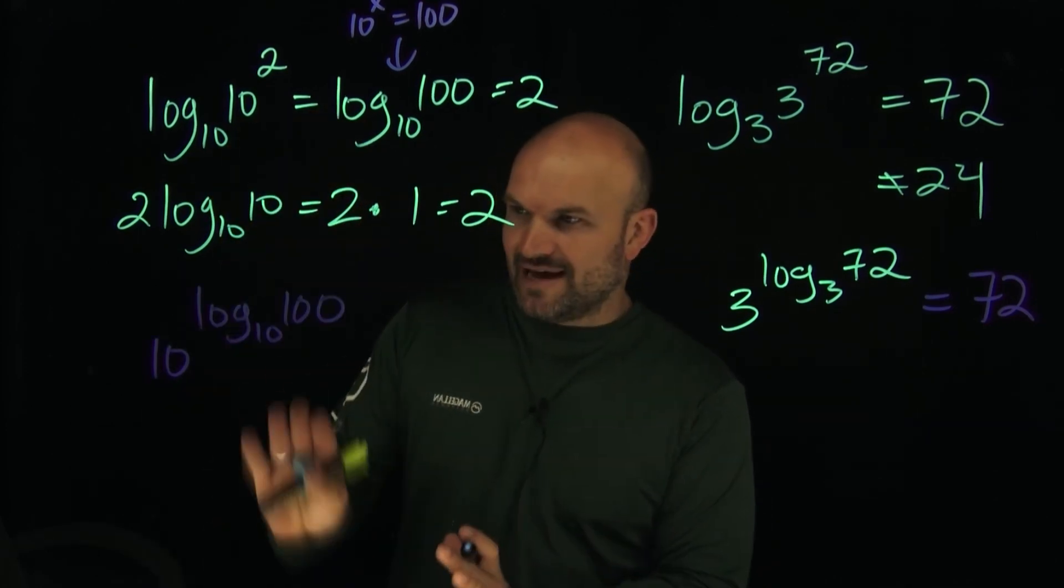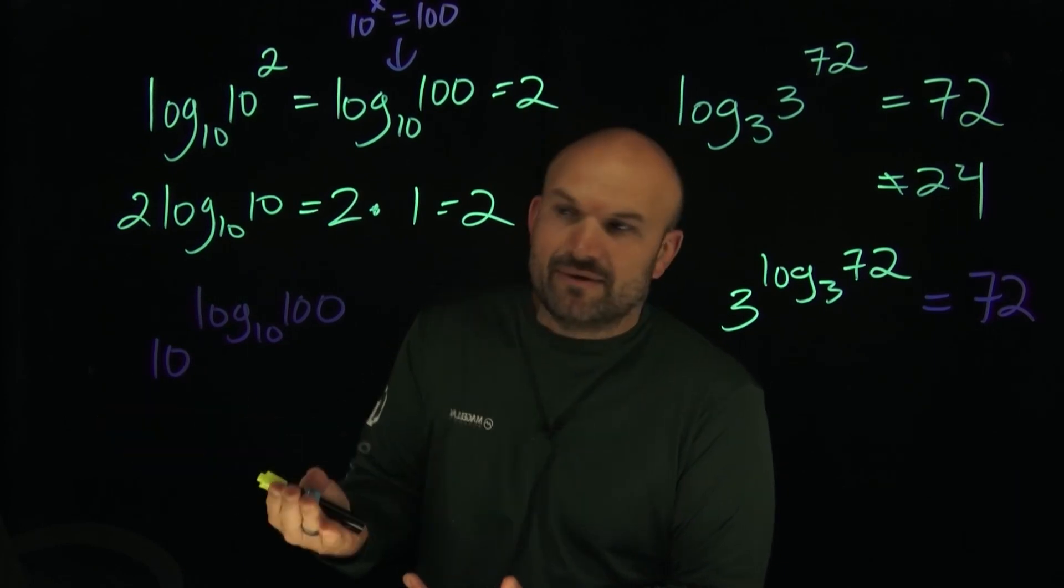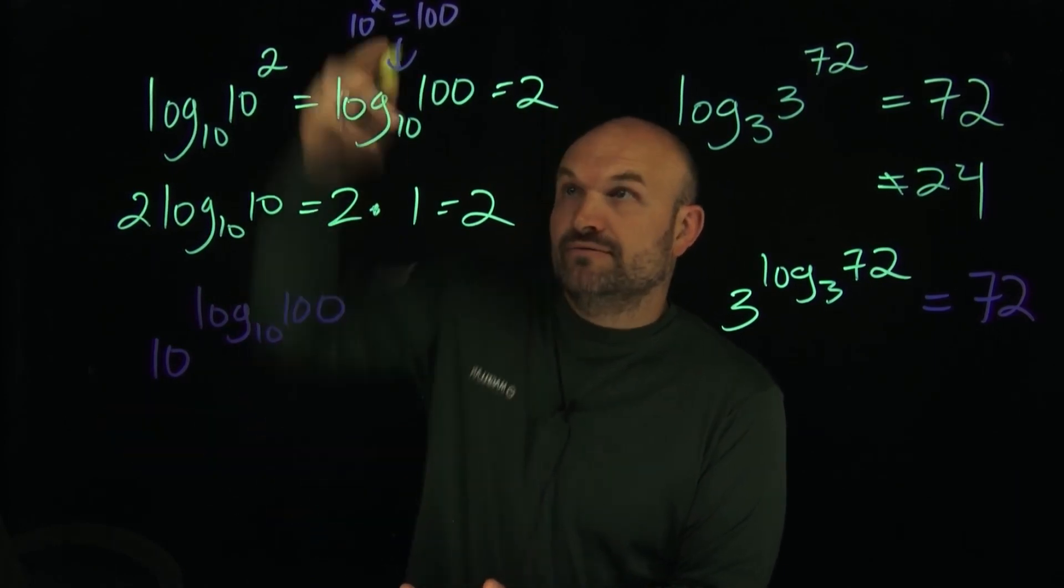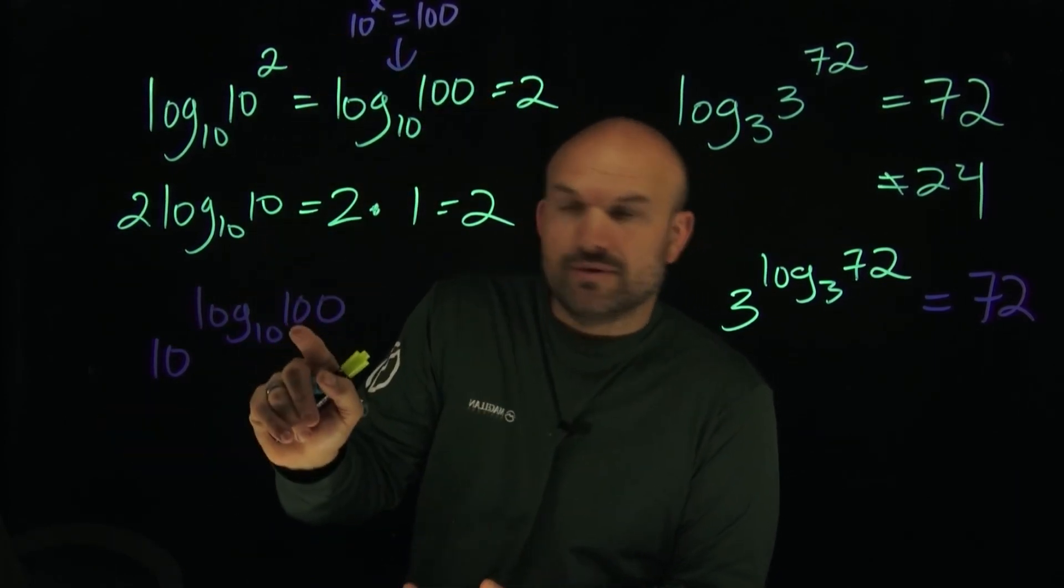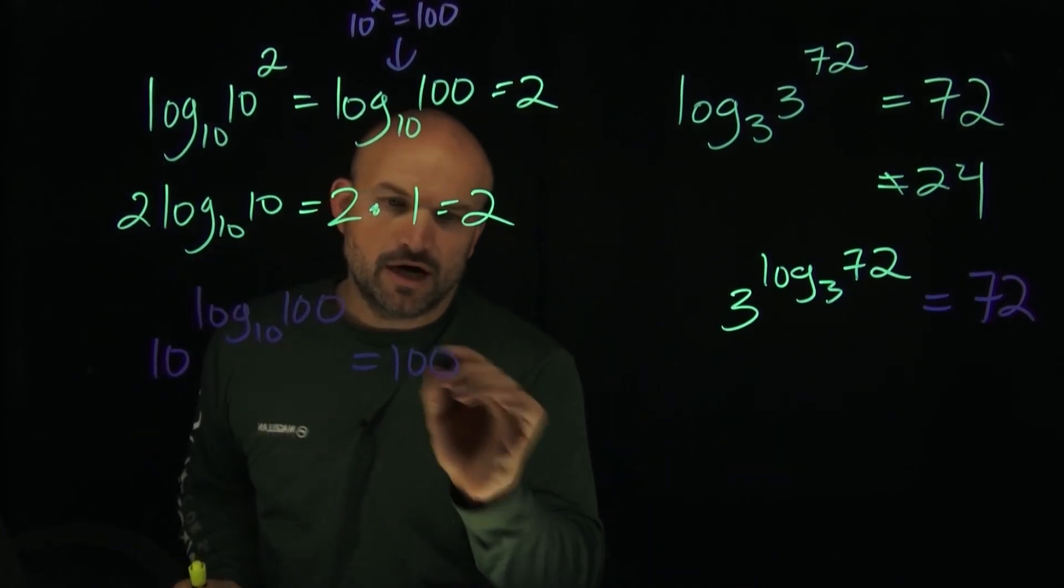Okay. Now, in this example, we have an exponential, or an exponent here. But thankfully, we can evaluate this because log base 10 of 100, as we already figured out, we know that answer is 2, right? And therefore we have 10 squared, which is now just going to equal 100.